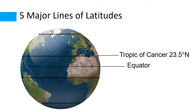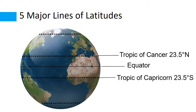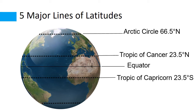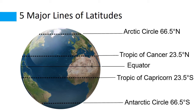This line is called the Tropic of Cancer. It is located at 23.5 degrees north. And this line is called the Tropic of Capricorn. It is located at 23.5 degrees south. The next latitude is the Arctic Circle, located at 66.5 degrees north. And this one is the Antarctic Circle, located at 66.5 degrees south.